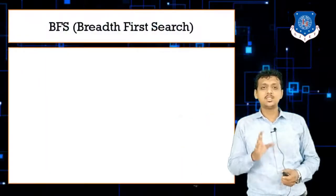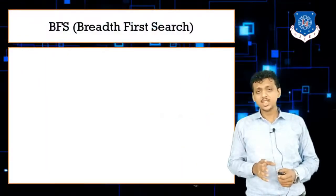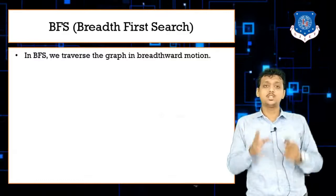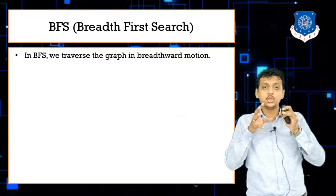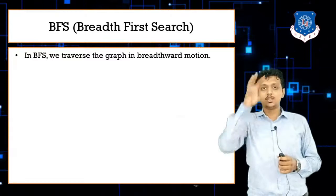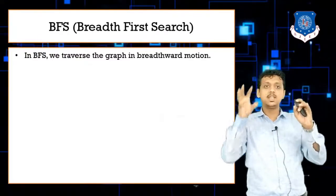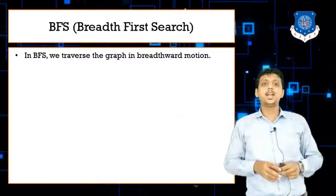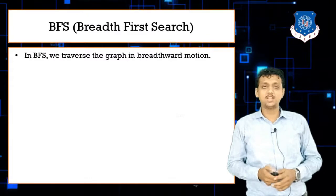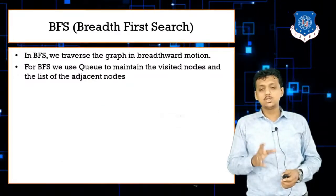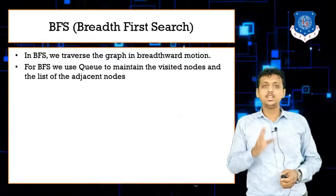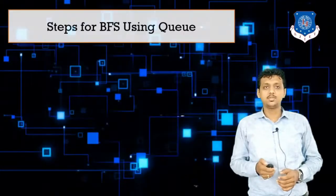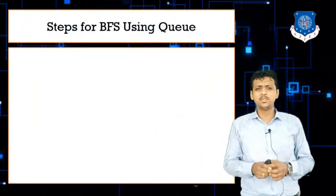Breadth first search traverses nodes according to the breadth of the graph. For example, if node A is the root, with B and C as children, you visit nodes in the breadth of the graph branches. BFS uses a queue to maintain visited nodes and the list of adjacent nodes.